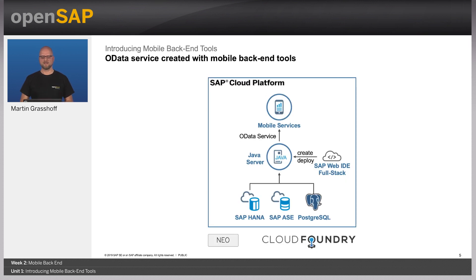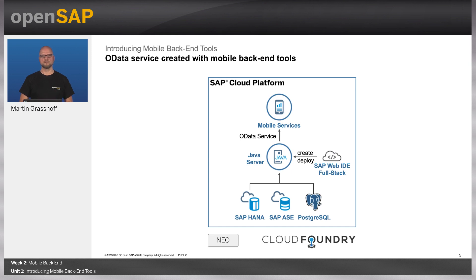From an architecture perspective, you see the mobile services, and the mobile services connects to your backend — in this case, a generated Java service coming from the mobile backend tools. The Java service itself connects to either one of the databases or the in-memory database, retrieves the data, converts it to OData, and gives it back to the mobile services, where it can then be consumed by the mobile devices.